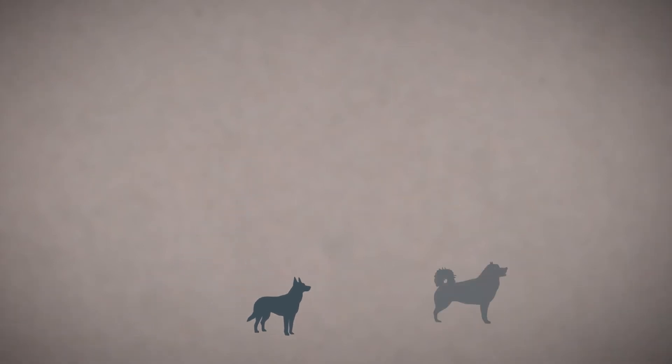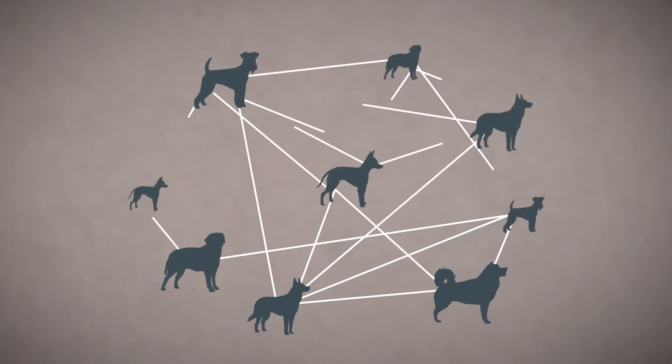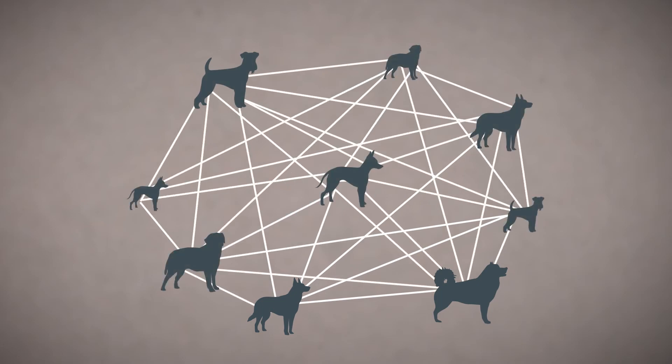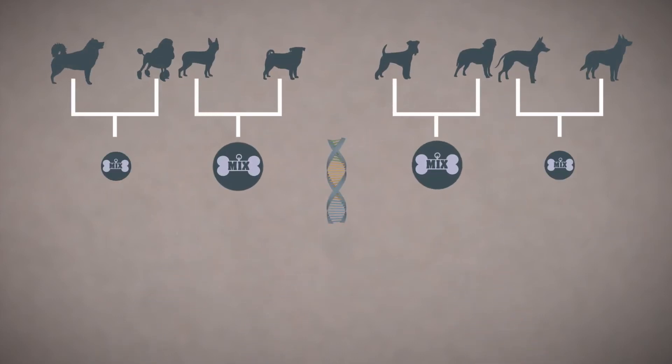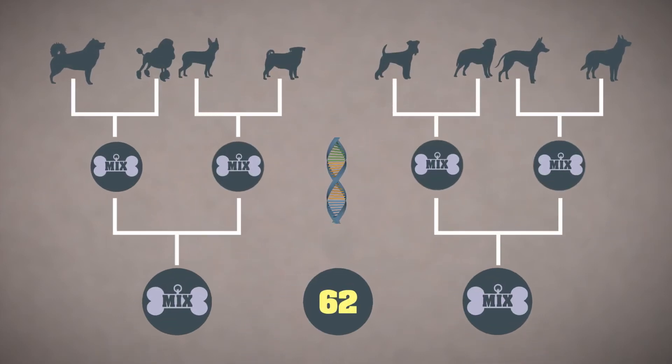Millions of pedigree combinations are built and compared to your dog's DNA markers, each one becoming more and more complex, all the way up to a tree containing as many as eight different breeds at the great-grandparent level.